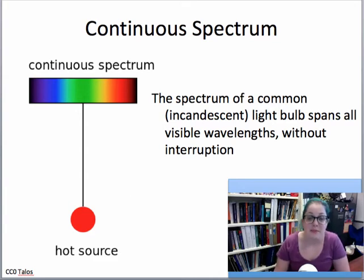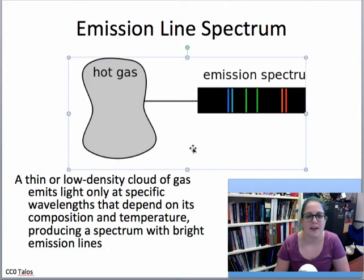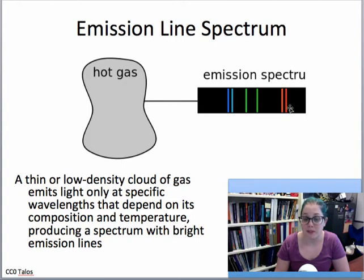Another type of spectrum is an emission line spectrum. This gives off certain specific wavelengths, or bright lines, in their spectrum. This is typically given off by a thin or low density cloud of gas, only emits specific wavelengths.